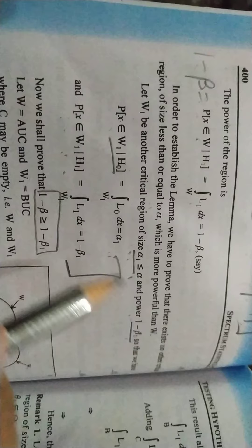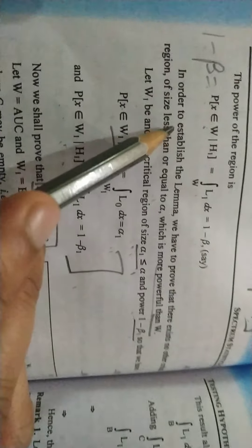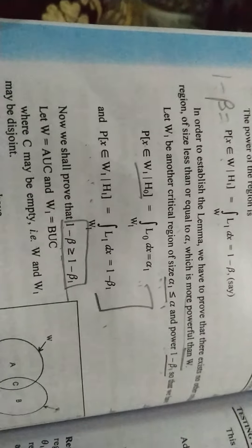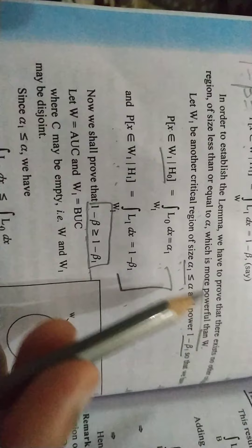This is a different critical region. Now we have to show you that the power of the given W is more powerful than others. So 1 minus beta is greater than 1 minus beta1. This has shown us that we have taken our region, it is the most powerful region. So the most powerful region is to prove its power.